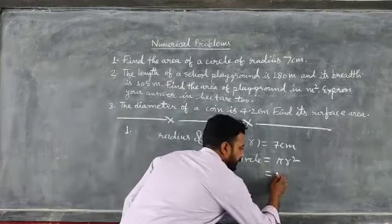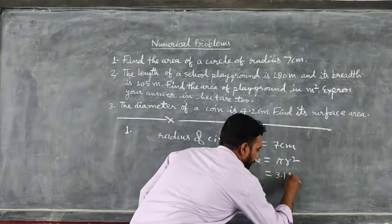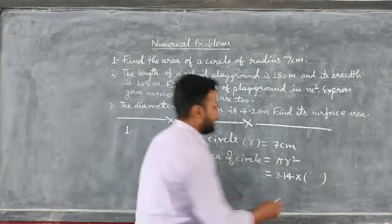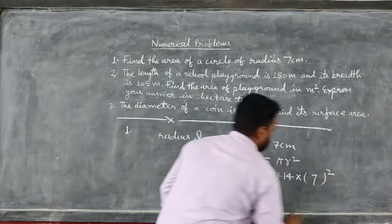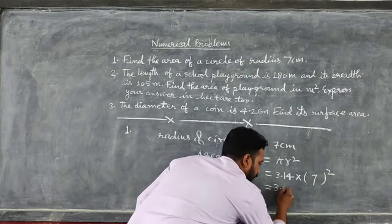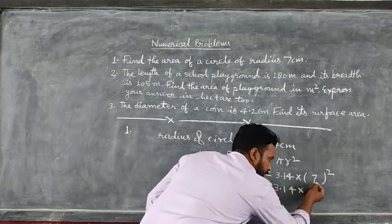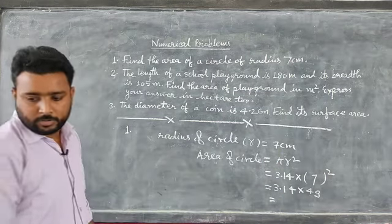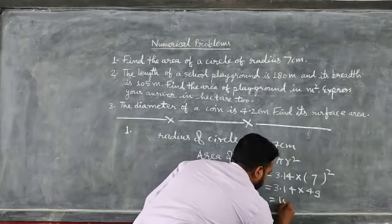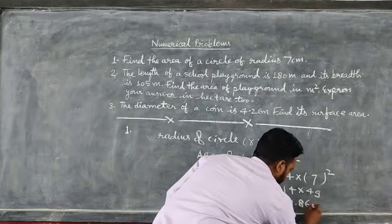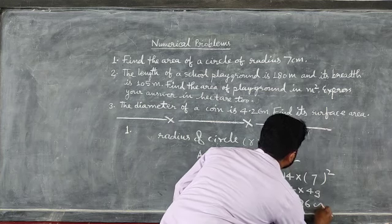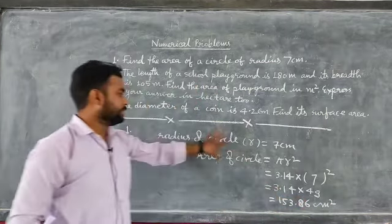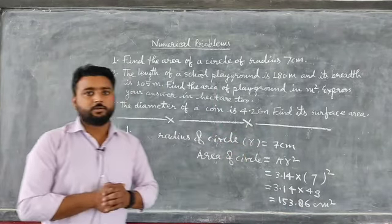Put the value of π as 3.14 and radius as 7. So we get 3.14 into 7 squared, which gives 3.14 into 49, and the area equals 153.86 square centimeters. This is the area of the given circle.